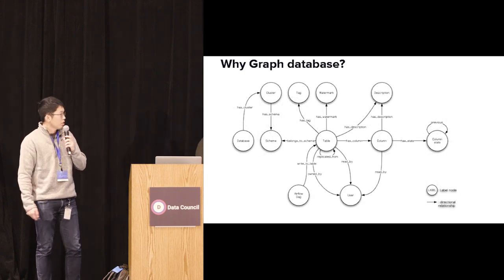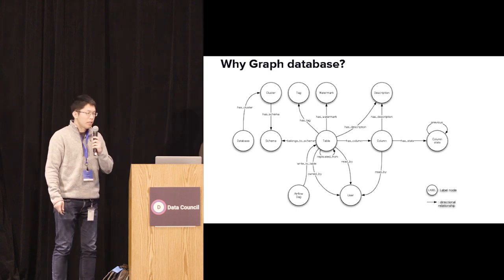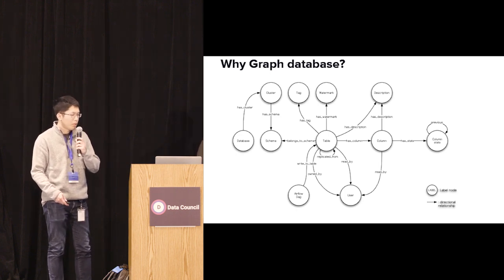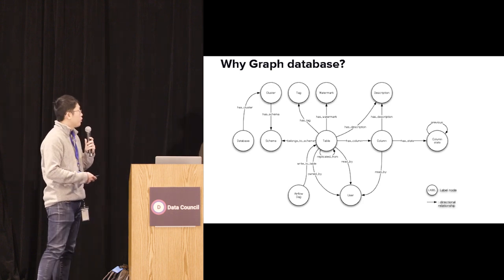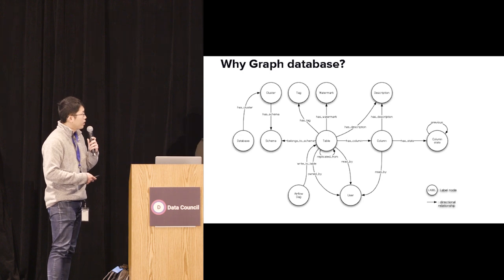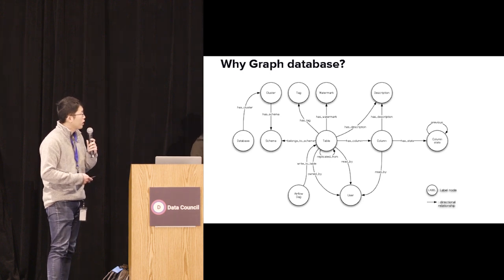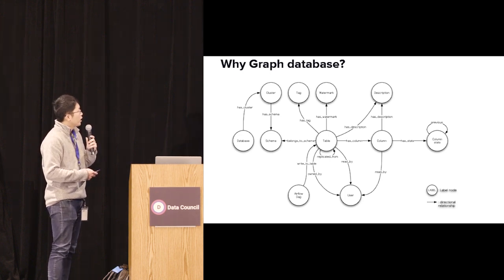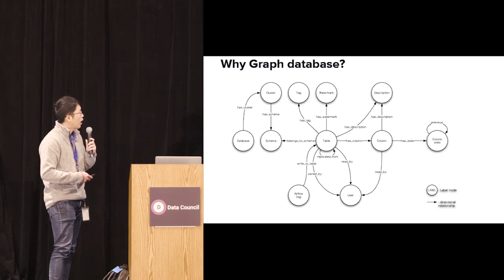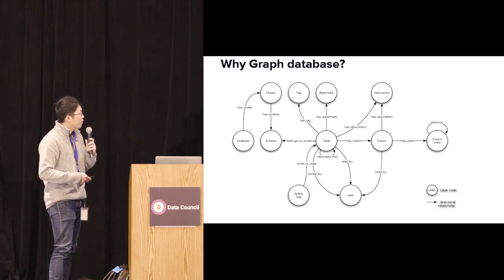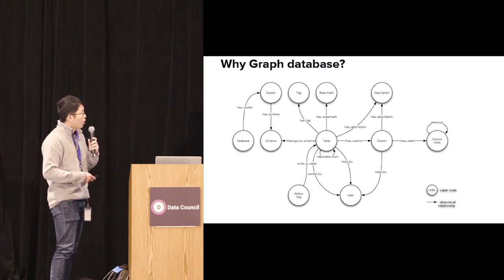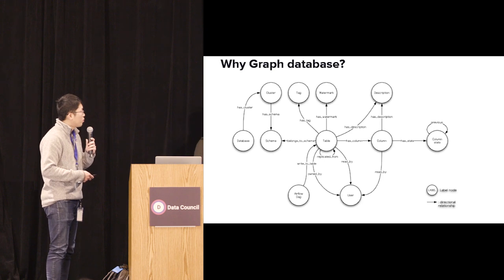The metadata graph powering the table detail page has a central table node connected to column nodes via 'has column' relationships, table description via 'has description', the ETL deck that generated the table, users who have used the table, and extended metadata like column statistics — all connected as edges in the graph.